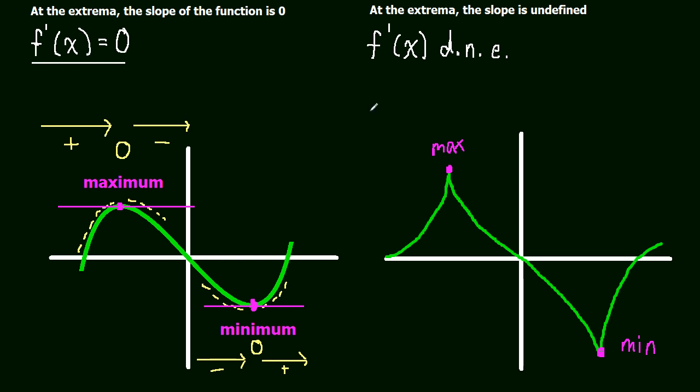the maximum and minimum happened when the slope of the function was 0, meaning the derivative was 0. And over here, the extrema happened when the derivative was undefined or did not exist, and the point had no slope. The maximum and minimum points had no slope.